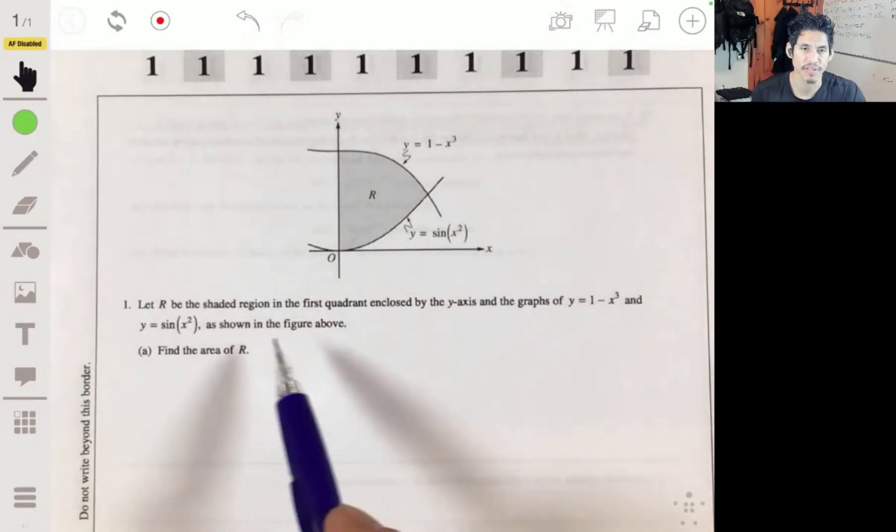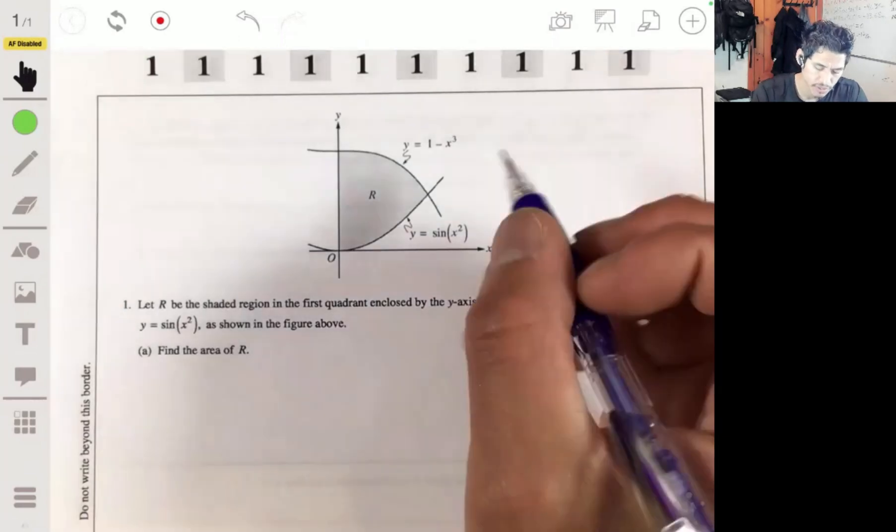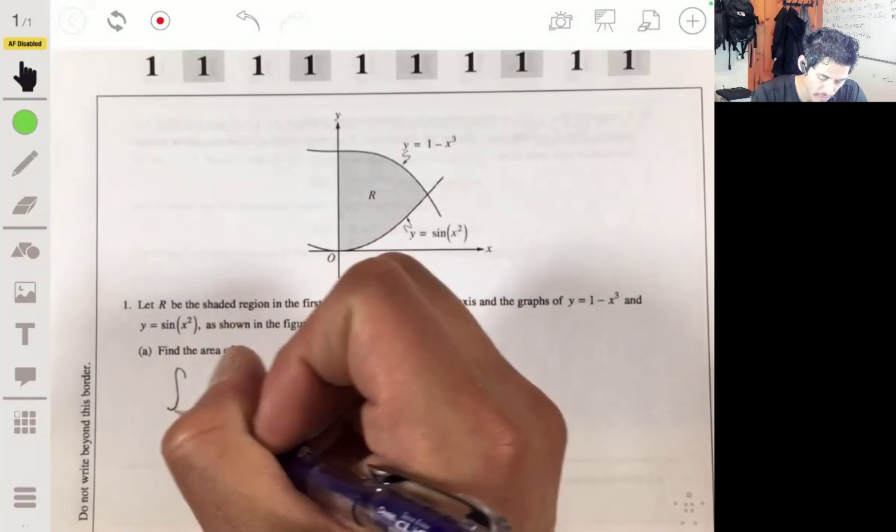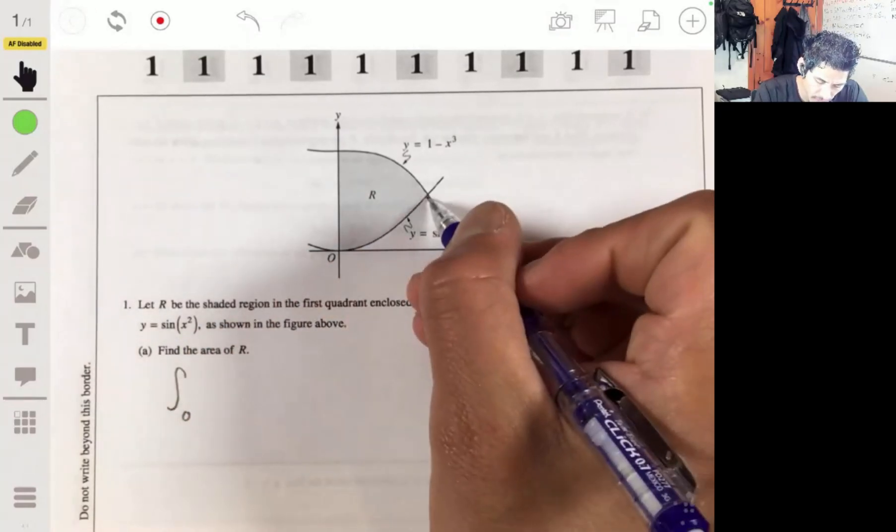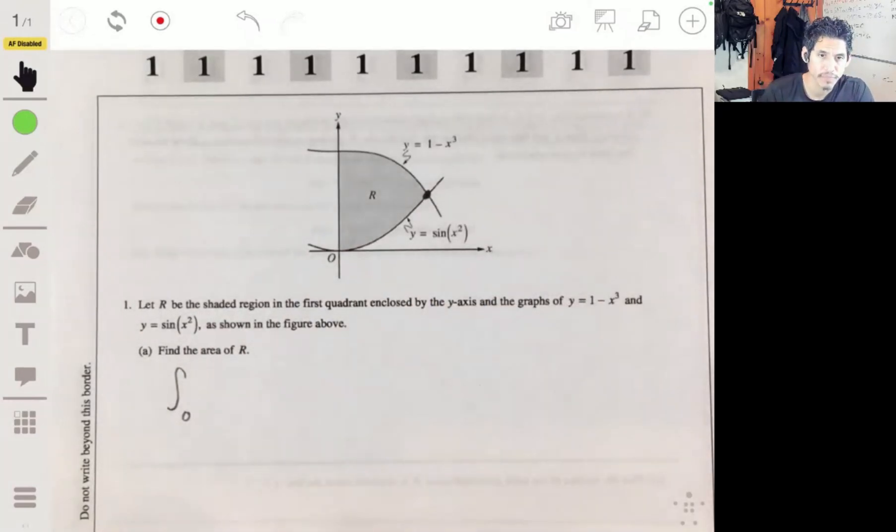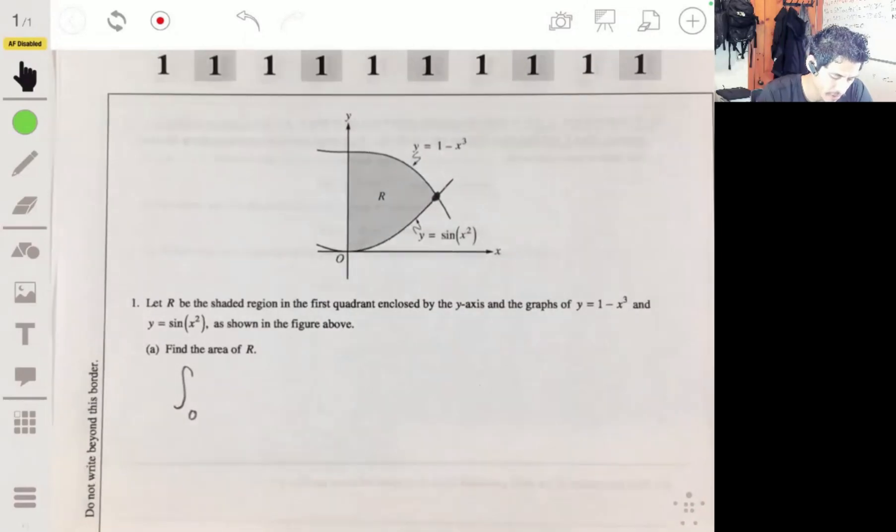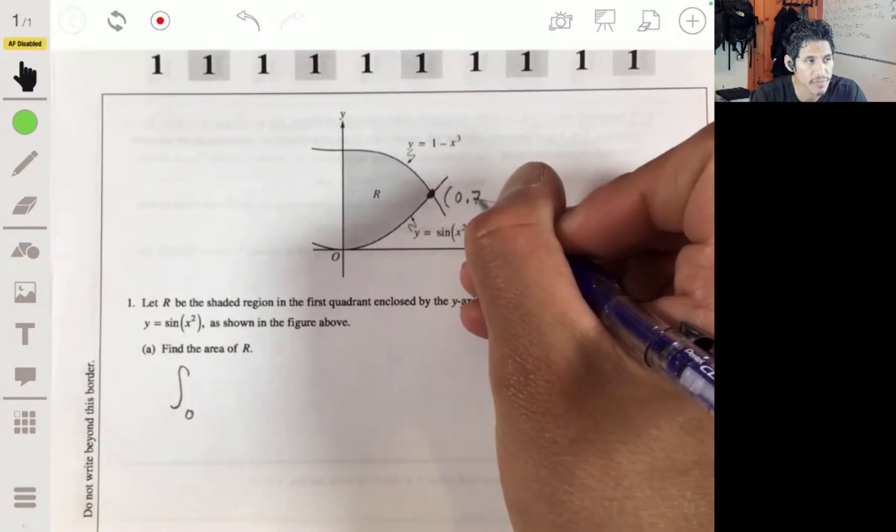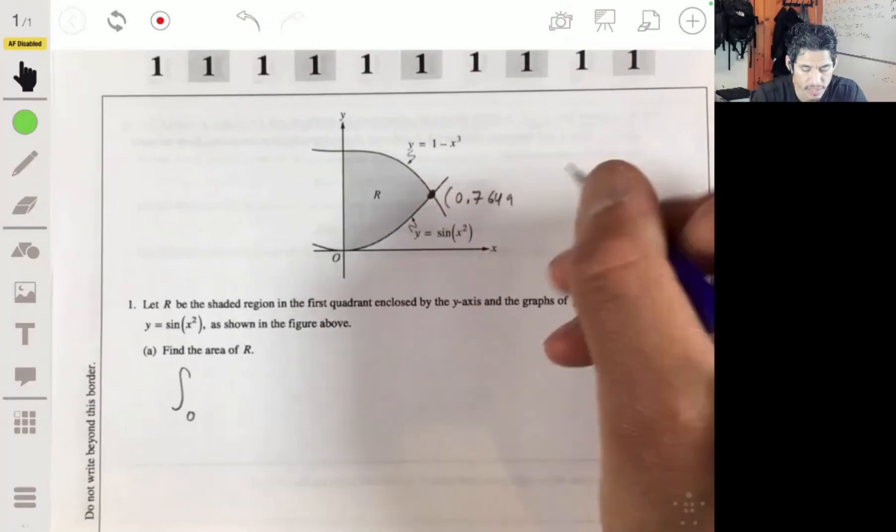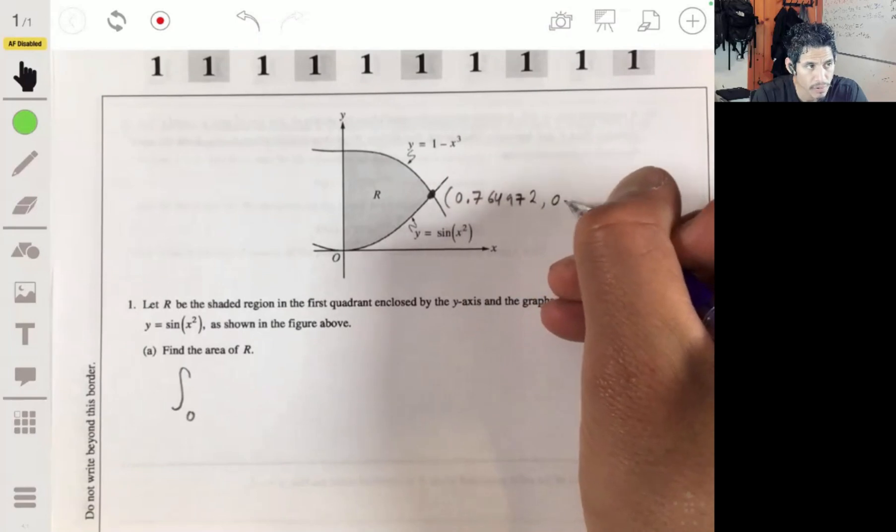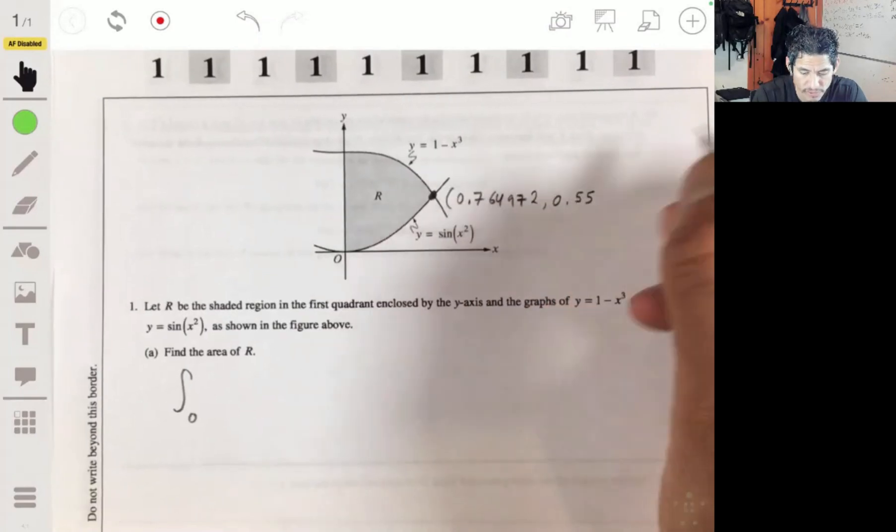Part a asks us to find the area of this. So for this, we're going to set up our integral from zero up to here, their point of intersection. We can use our graphing calculator, and we will find that this point over here is about 0.764972 comma 0.55235.